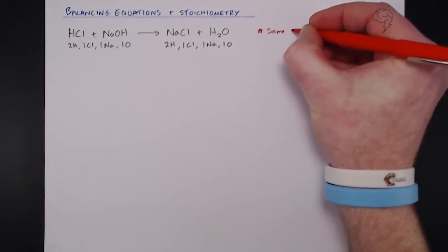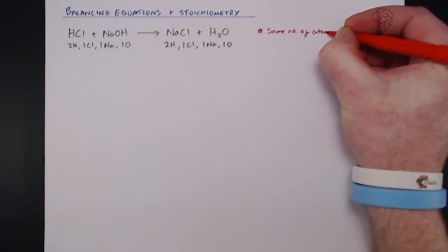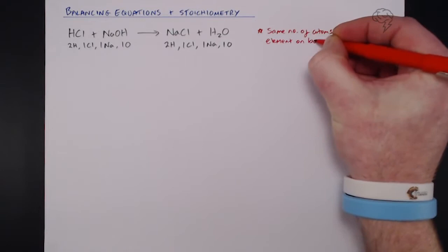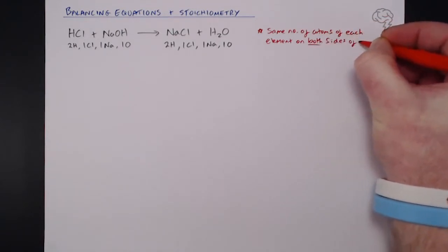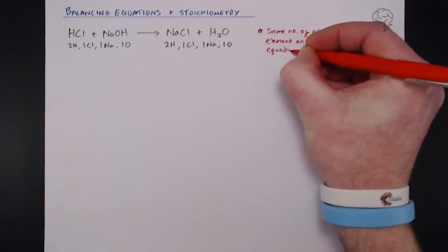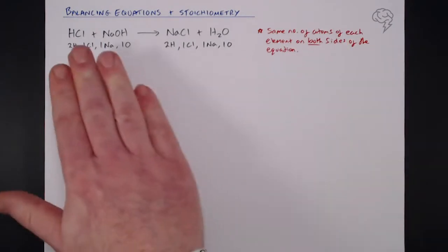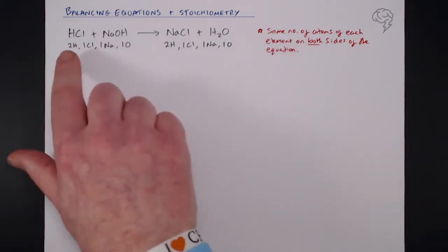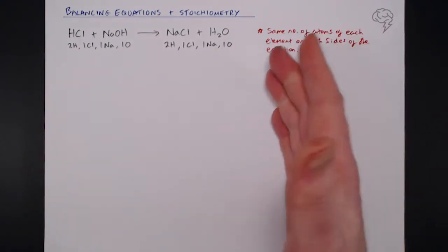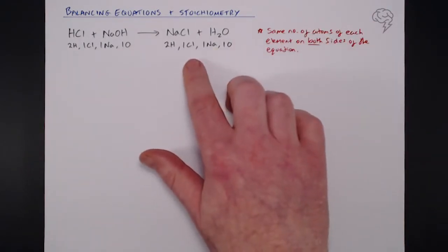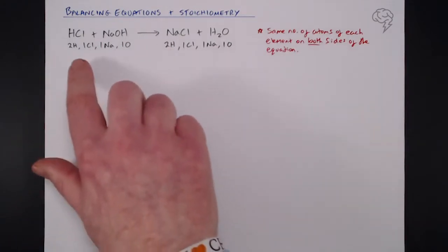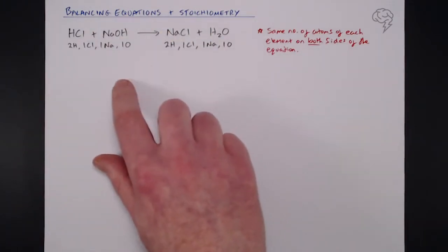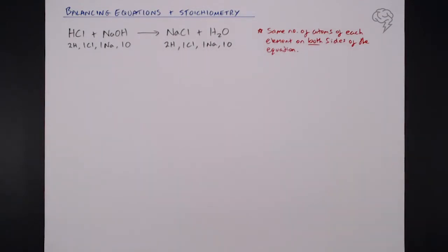The name of the game is to find the same number of atoms of each element on both sides of the equation — quite simply, what goes in must come out. You can't put one chlorine in and expect two chlorines out. So we need to find a way of balancing, and we're going to move on to an example where we do have to balance it.